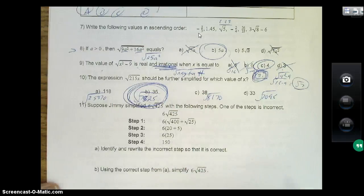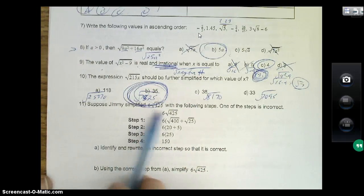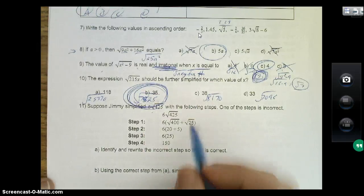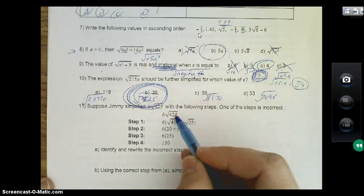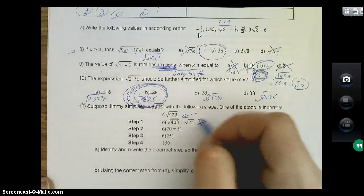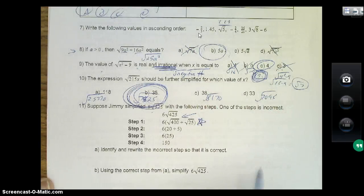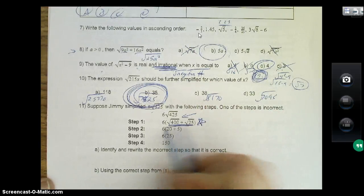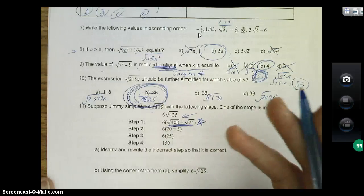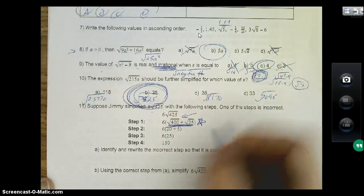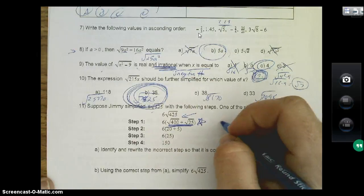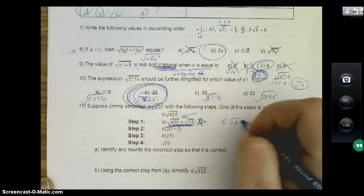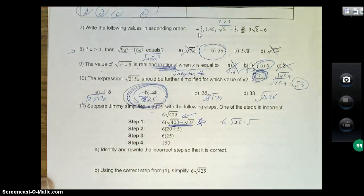Suppose Jimmy simplifies 6 square root of 425, of the following steps which is incorrect. All right, he's breaking up square root of 425. Well look how he broke it up right here. This is actually a step that's incorrect: you can't break up square roots by addition, you have to do it by multiplication.